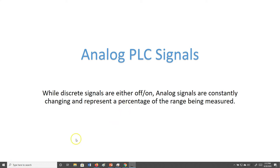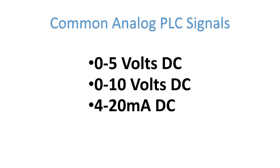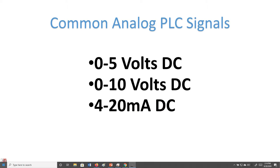Some of the common analog signals we use in PLCs are 0 to 5 volts DC, 0 to 10 volts DC, and 4 to 20 milliamps DC. This is in America — it varies in European countries and Canada. Pretty much any industry nowadays is standardized on these three signals, with my experience being that most industry has standardized on 0 to 10 volts DC or 4 to 20 milliamps DC.